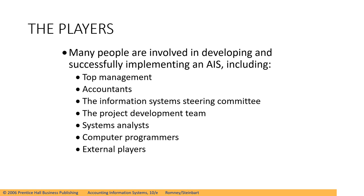Let us recall first the five phases of the system development life cycle. We have: first, system analysis; second, conceptual design; third, physical design; fourth, implementation and conversion; and fifth, operation and maintenance. Now, let us talk about the players of the system development life cycle and the players who are responsible for the successful implementation of this AIS. We have several players in the system development life cycle.